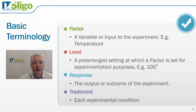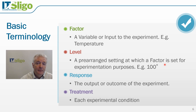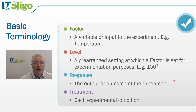There is some basic terminology we need to understand. A factor relates to a variable or input to the experiment — for example, temperature could be a factor. Levels relate to the setting of that factor; for example, we may set temperature at 100 degrees Celsius, or at two levels: 100 and 120 degrees Celsius. The response is the name given to the output or outcome of our experiment. The treatment is the experimental condition — for example, operating temperature at 100 degrees and pressure at 70 PSI.